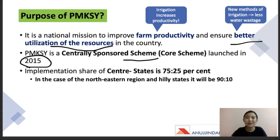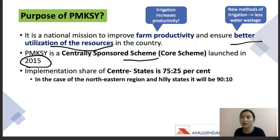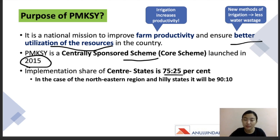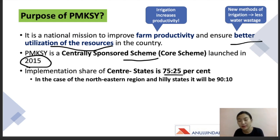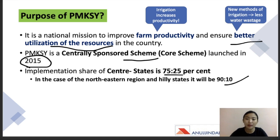The implementation is shared by the central as well as the state government. For normal states, the share is 75:25 — meaning 75% is sponsored by the central government and 25% by the state government. However, for hilly regions and northeastern states like Himachal Pradesh or Uttarakhand, it is 90% by the centre and 10% by the state. Remember these two ratios as they are very important for the exam.